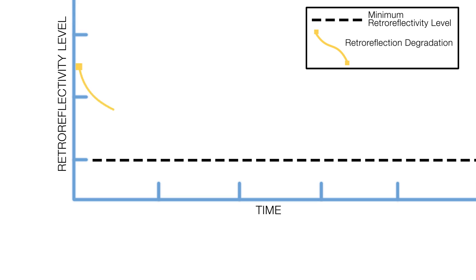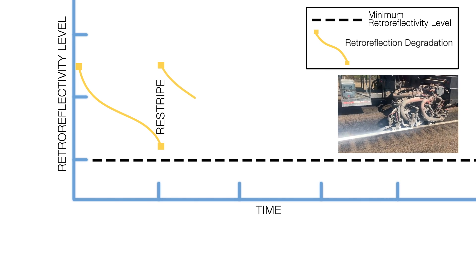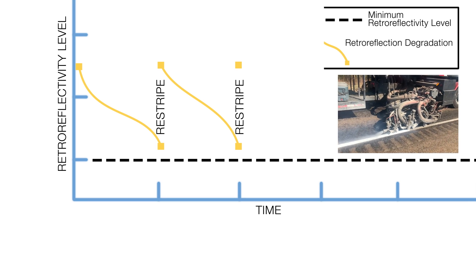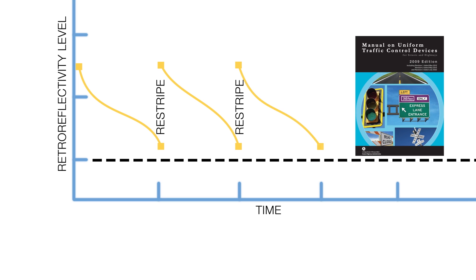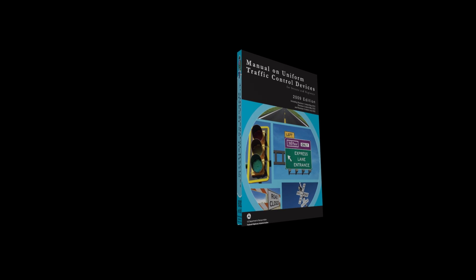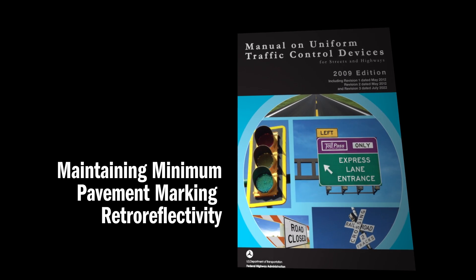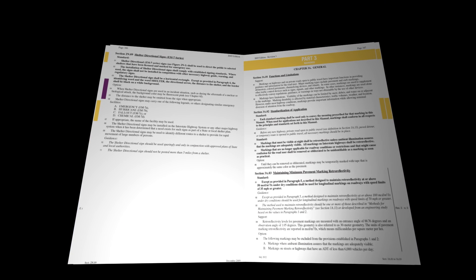This property of pavement markings degrades over time. That's why markings need to be replaced periodically, and there are now provisions in the Manual on Uniform Traffic Control Devices, or MUTCD, to use a method to maintain minimum levels of retroreflectivity. This video was created to help you become familiar with how to comply with the pavement marking retroreflectivity provisions, now in Part 3 of the MUTCD.